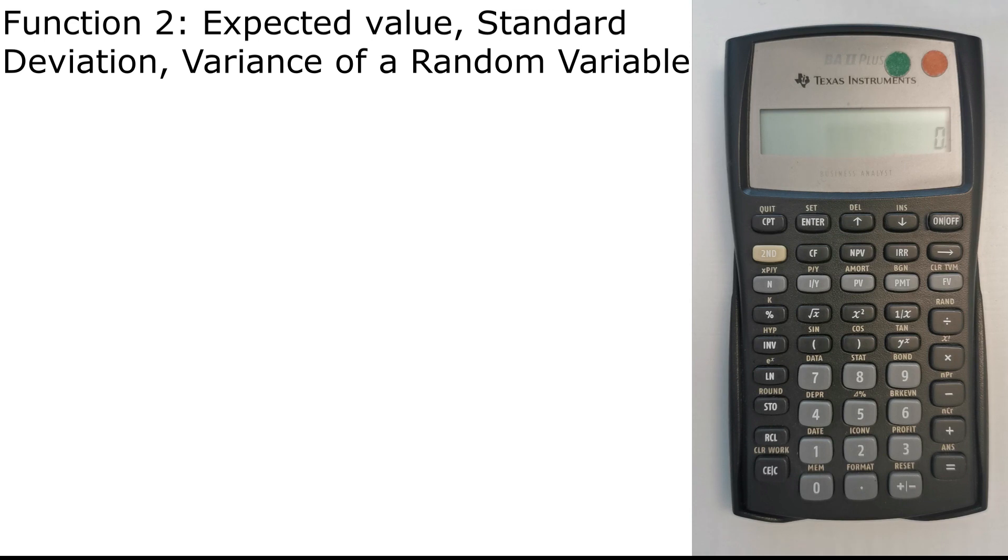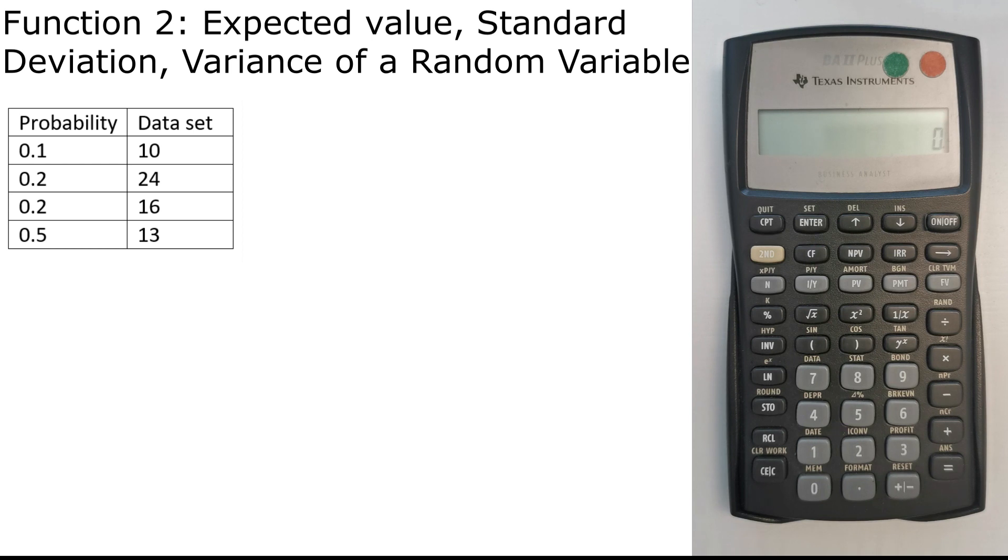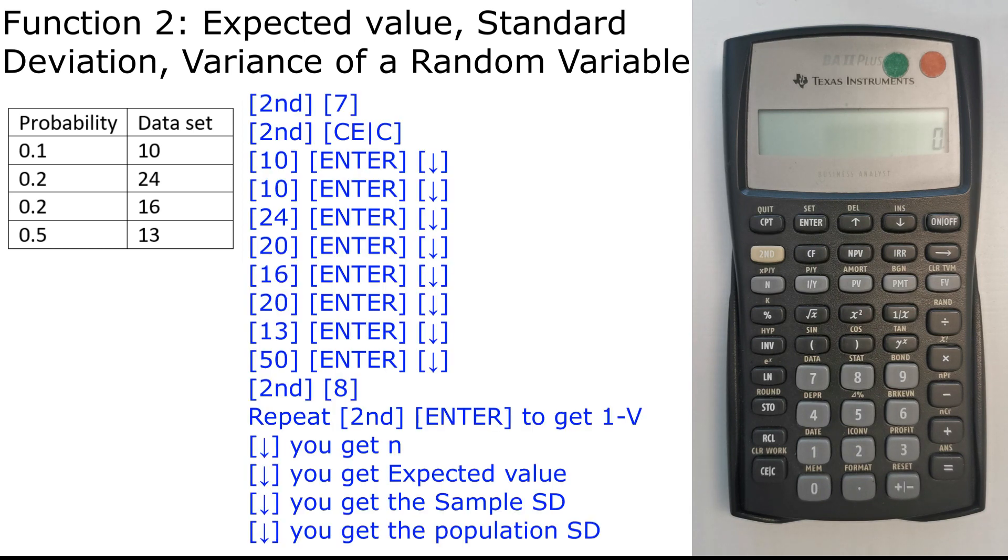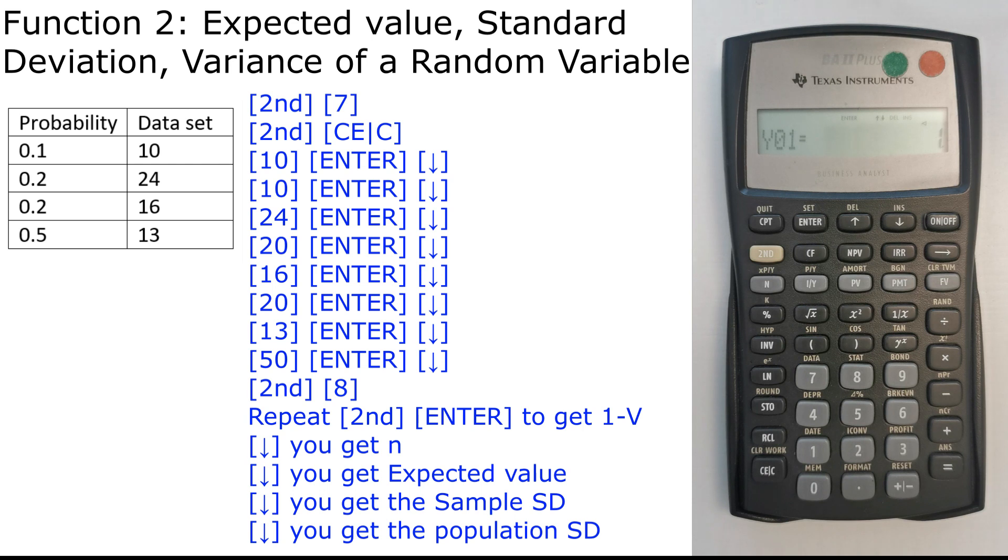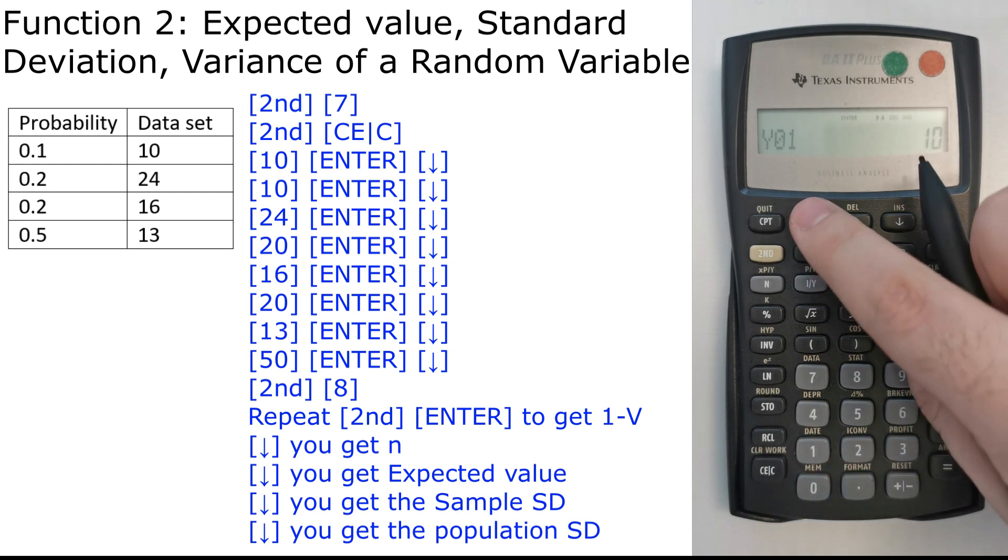So for the second function that I will show you today is how to calculate the expected value, standard deviation, and variance of a random variable. Given the following data set and the equivalent probability, we will input the data into the calculator. We press again 2nd, then data 7, then 2nd to clear out our work. Now we cleared what we had previously. Then we're going to input the data. First X01 is 10, so we press 10, enter.